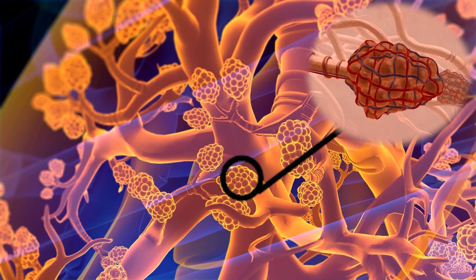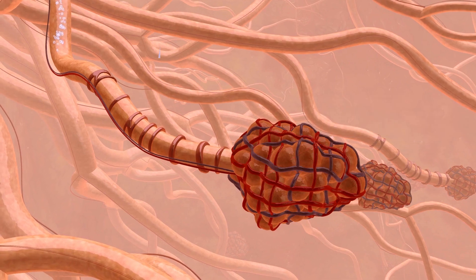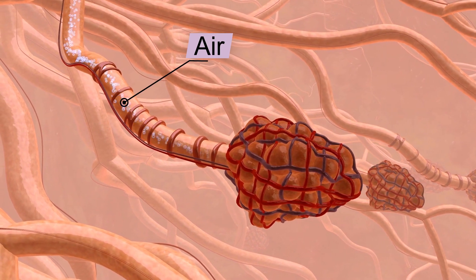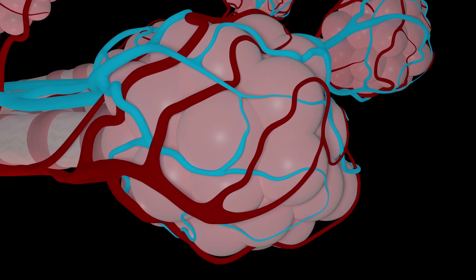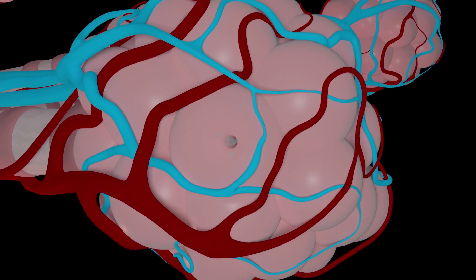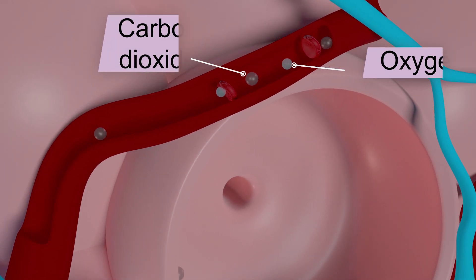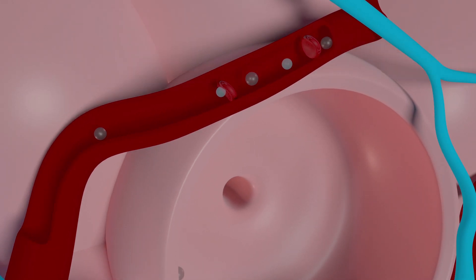The alveoli are surrounded by a network of tiny blood vessels called capillaries. The walls of the alveoli and the capillaries share a fused basement. As a result, when air enters the alveoli, oxygen in the air seeps through the thin walls of the tiny sacs into the neighboring capillaries.